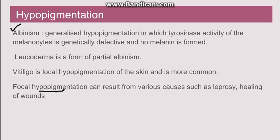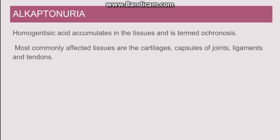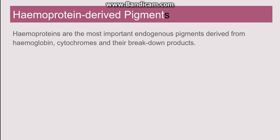Another pigment is seen in alkaptonuria, where there is a defect in an enzyme used for processing of phenylalanine and tyrosine amino acids. Homogentisic acid, an intermediate, accumulates in the tissues and causes pigmentation known as ochronosis. The homogentisic acid accumulates in cartilages, capsules of the joints, ligaments, and tendons, giving them a brownish-black pigmentation.